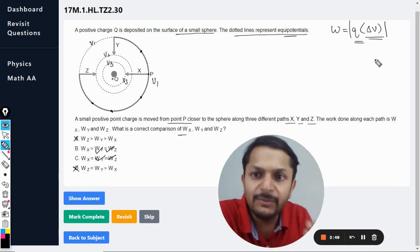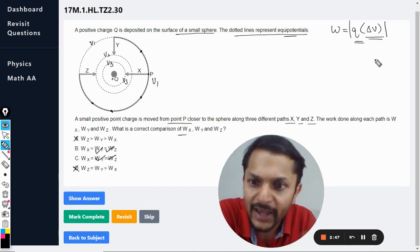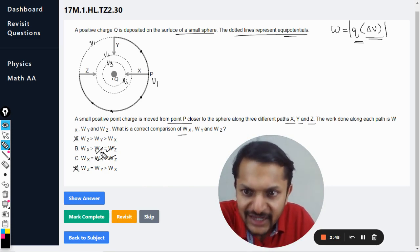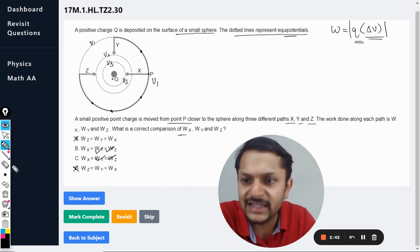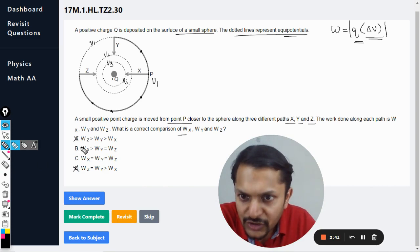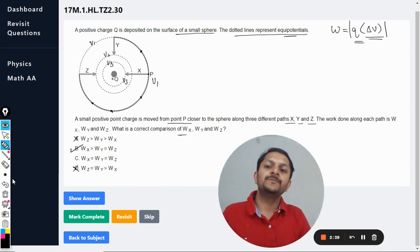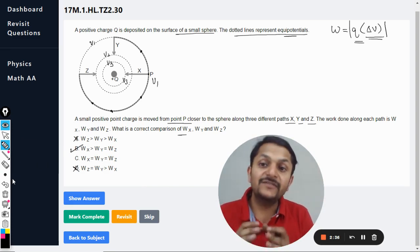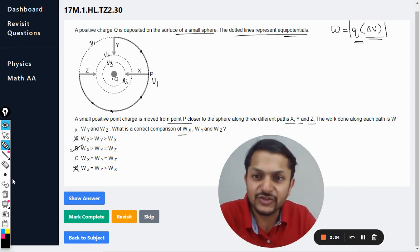So WX is greater than WY, and WY is equal to WZ. So definitely the answer is B. It cannot be C, the answer is B. I believe this question should be really clear, my students.